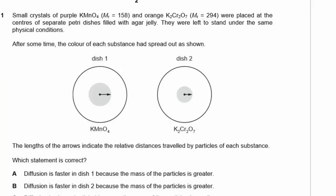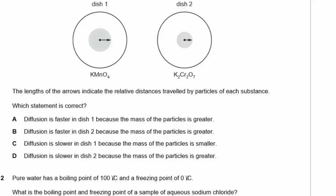Question 1. Small crystals of purple KMnO4, which has a relative molecular mass of 158, and orange K2Cr2O7, which has a molecular mass of 294, were placed at the centers of separate Petri dishes filled with agar jelly. They were left to stand under the same physical conditions. After some time, the color of each substance had spread out — dish one with KMnO4 spread farther than dish two with K2Cr2O7. The length of the arrows indicate the relative distances traveled by particles of each substance. So: molecular mass of KMnO4 = 158, and molecular mass of K2Cr2O7 = 294.